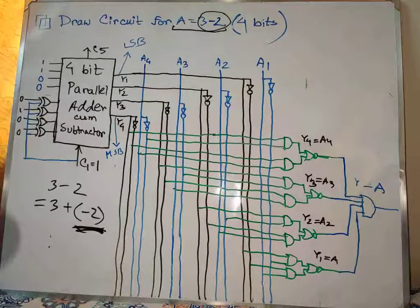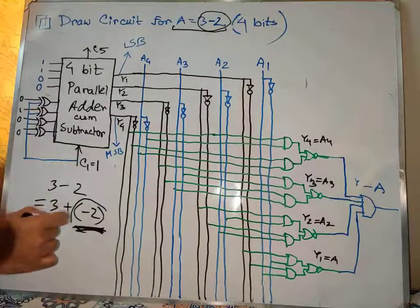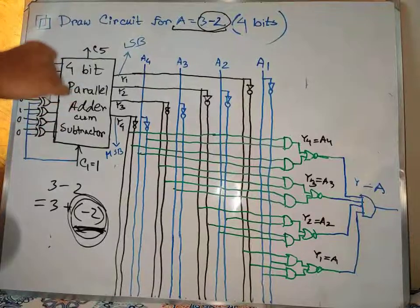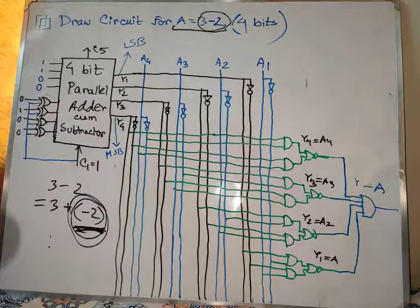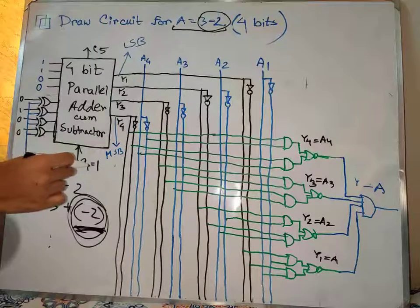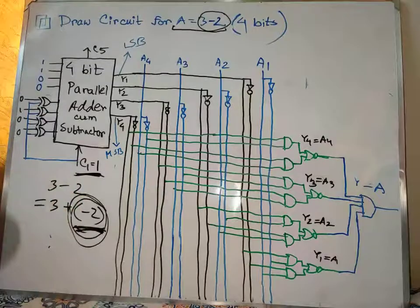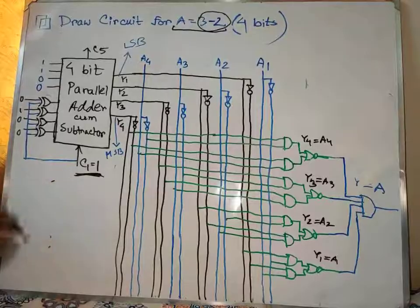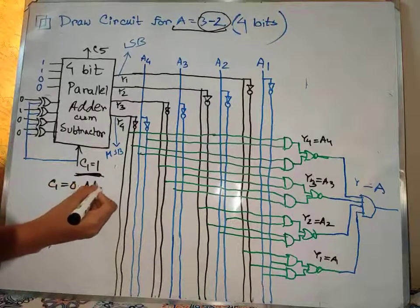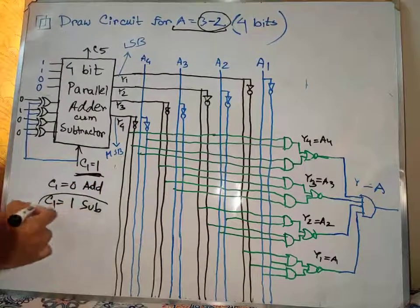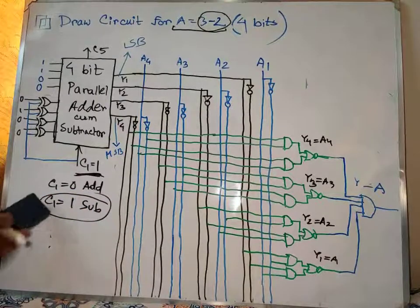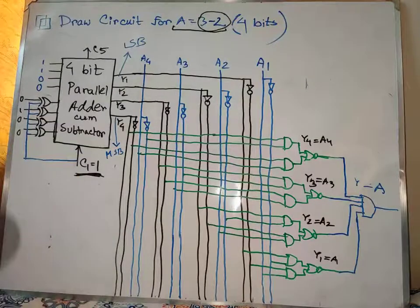We have to get the error subtracted. We have to get the negative version of the code and implement it. The negative version of the code is the same. Now we can identify the negative — the difference between the two numbers.